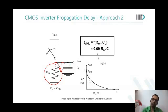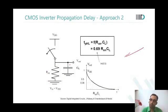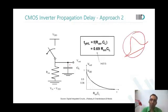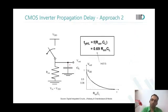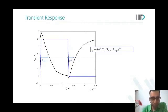The R_on method is usually simpler because estimating R_on for the linear region is much easier. Calculating the average current from the transfer characteristic curve can be very tricky. So the R_on model is a simpler and more intuitive model to work with.